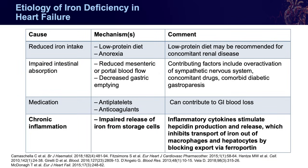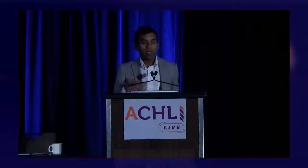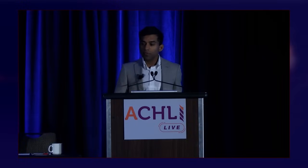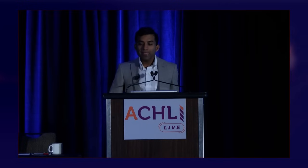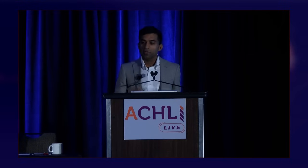Perhaps increasingly recognized — and most common in patients with chronic illnesses like heart failure — is the issue of chronic inflammation. Chronic inflammation impairs the tissue's ability to actually release iron, and ultimately impairs the cell's ability to utilize iron.